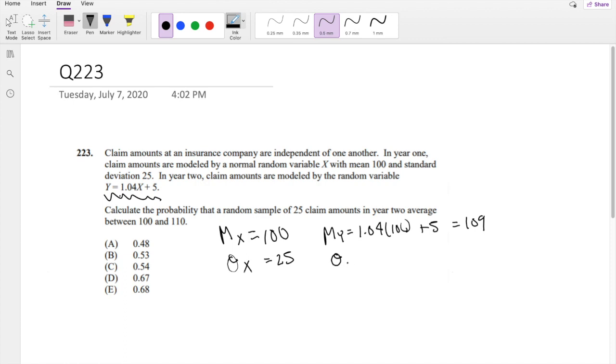And the standard deviation of Y is just equal to, because standard deviation measures the width. So from the original X, they're basically saying it's multiplied by 1.04. So it's like that, and it's shifted over 5. But we don't really care because we're trying to look at the range. So we can actually just ignore the plus 5 part and just focus on the 1.04.